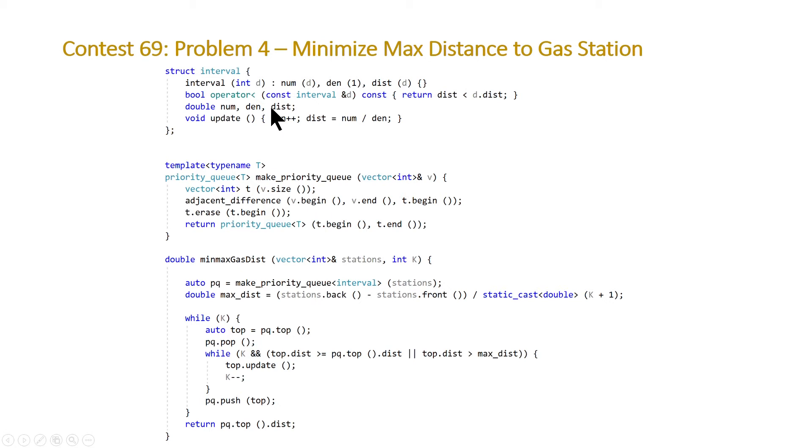And you can see that we have this function called update. And so whenever we need to basically add a gas station to this interval, we're going to increase the denominator, add a gas station, and then update our distance, which will just be equal to the numerator, the original distance between the two adjacent gas stations, and the denominator, which is one plus the number of gas stations that have been added, because we can't divide by zero when there's no gas stations.